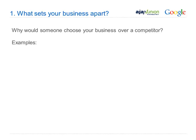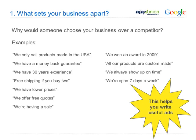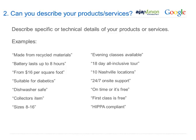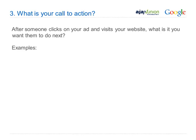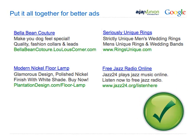Here are three tips to remember. First, think about what sets your business apart — why should someone choose you over a competitor? Think about your competitive advantages, like 'we only sell products made in the USA' or 'we have a great money-back guarantee.' Second, describe your products and services with specific technical details, such as 'made from recycled materials,' 'battery lasts up to 8 hours,' or 'evening classes available.' Third, you need a call to action — tell people what to do after clicking your ad: 'call us,' 'request something,' 'learn more,' 'order a copy.' Bring all three together and you'll have a better ad.